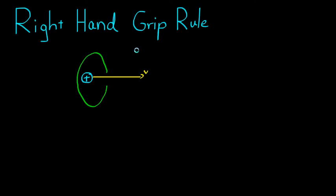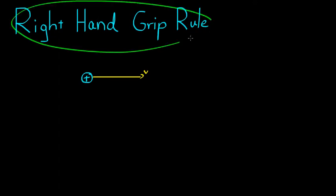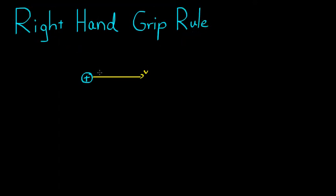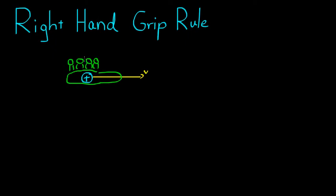You can determine the direction of the magnetic field using the right hand grip rule. It's quite easy - all you've got to do is put your thumb in the direction of current. So you've got your thumb in the direction of current of your right hand. Then your fingers, you curl them around like you're holding onto a wire. The curl of your fingers - palm is in here, tips of the fingers are here - shows you the direction of the magnetic field.